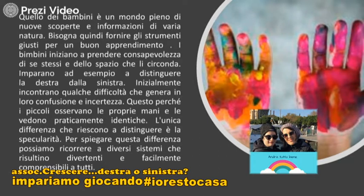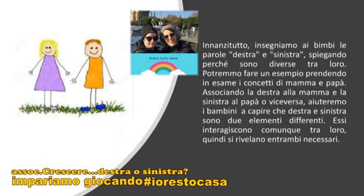Per spiegare questa differenza possiamo ricorrere a diversi sistemi che risultano divertenti e facilmente comprensibili a tutti. Innanzitutto insegniamo ai bambini le parole destra e sinistra, spiegando loro che sono diverse tra loro. Potremmo fare un esempio prendendo in esame i concetti di mamma e papà, associando la destra alla mamma e la sinistra al papà o viceversa. Aiuteremo così i bambini a capire che la destra e la sinistra sono due elementi differenti che però interagiscono tra loro e si rilevano entrambi necessari.